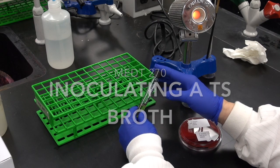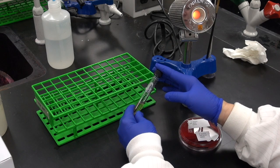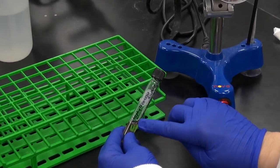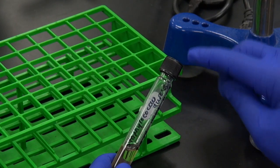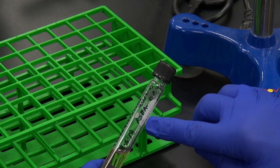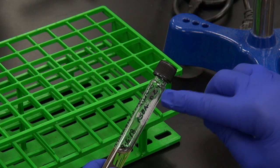This demonstration shows how to inoculate a fresh broth from a culture plate. We start with a fresh tryptocase soy broth labeled with the full name of the organism, the date, your initials, and your section number.